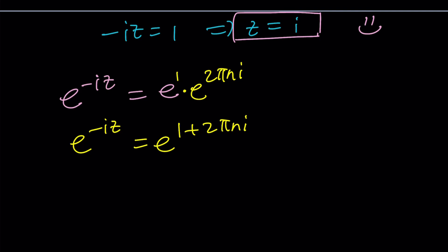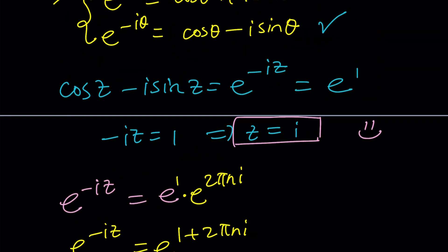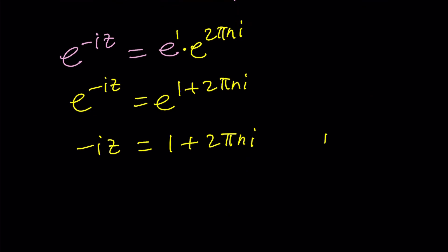And when you natural log both sides you're going to get negative i z equals one plus two pi n i. Yes with our quick shortcut we got z equals i. In this case if you replace n with zero you get that solution. It's just one of the solutions. There are infinitely many. For each value of n you're going to get a different solution. But let's divide everything by negative i first or multiply everything by i. That's going to give you i minus two pi n.